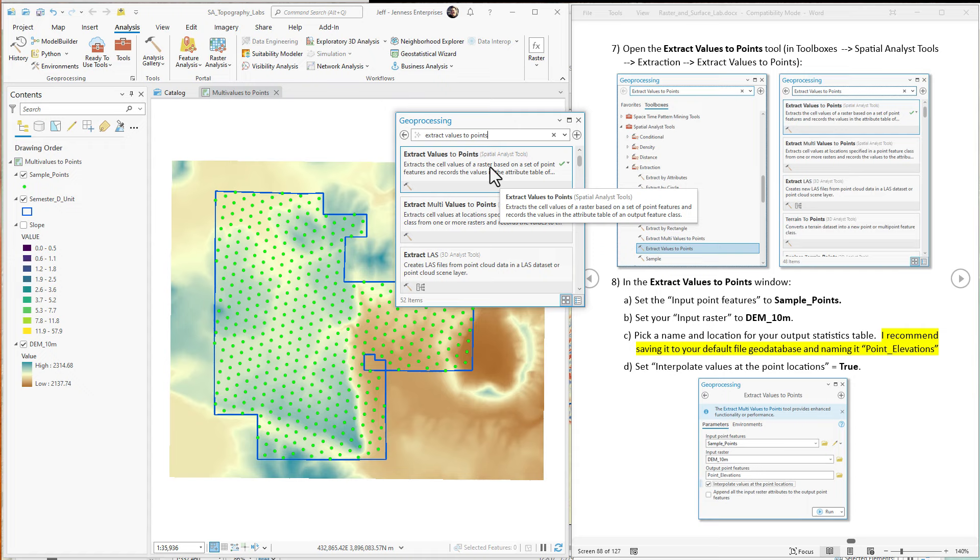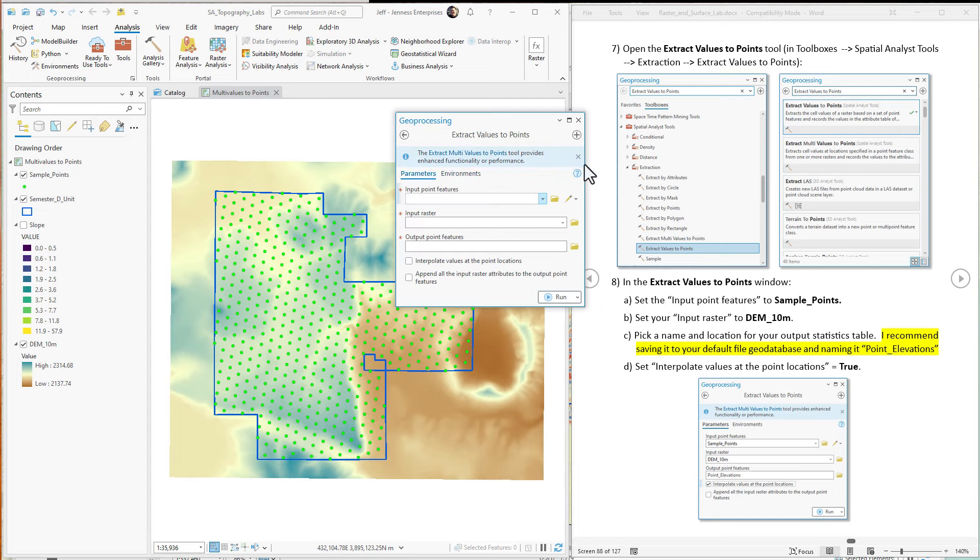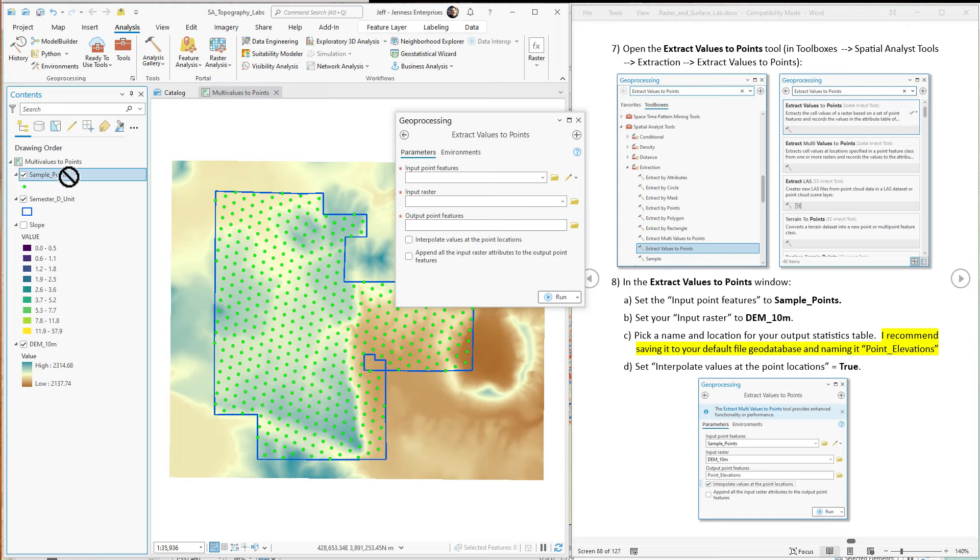It'll only operate on a single raster at a time, so we'll do it twice, once on the DEM and once on the slope. That's not a problem. There's only two rasters. All right, so the point feature class we're going to use, no surprise, is sample points. The input raster is the DEM.